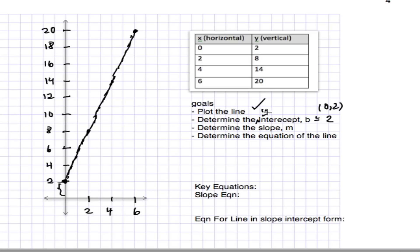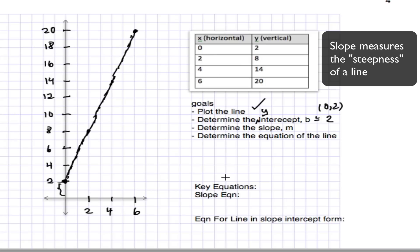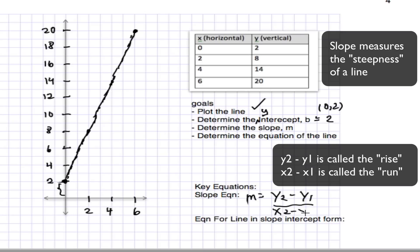Now, to get the slope of this line, we're going to take two points on our plot. And any two points will do. Let's remember our key equation, the slope equation. That is given by y2 minus y1 over x2 minus x1.